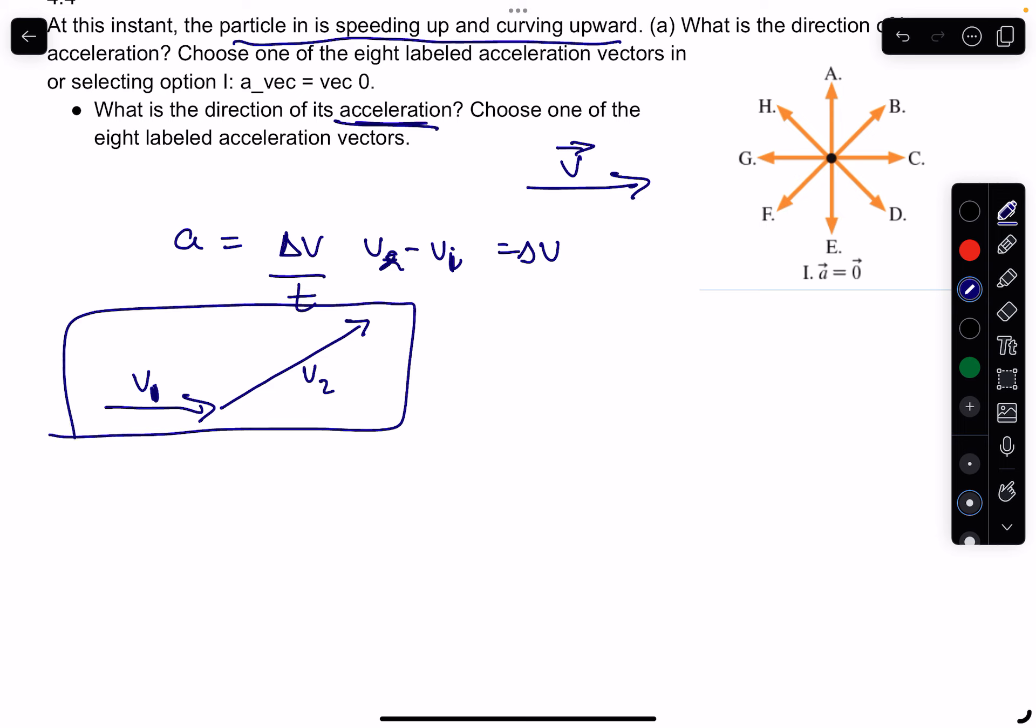So we have to sort of think of this vectorially. So v2 minus v1 vectorially would be like saying v2 plus negative v1. These are vectors.